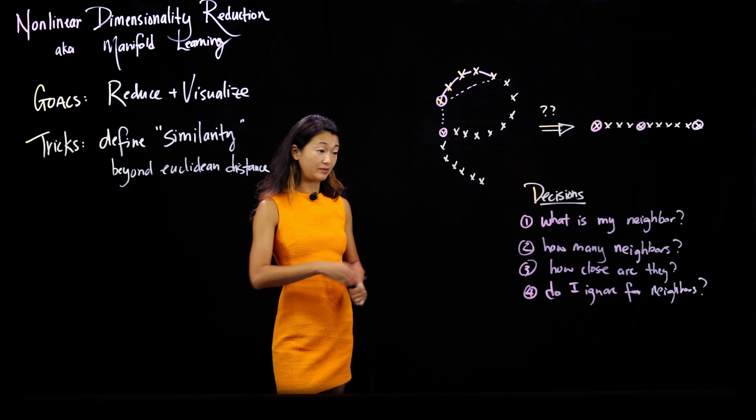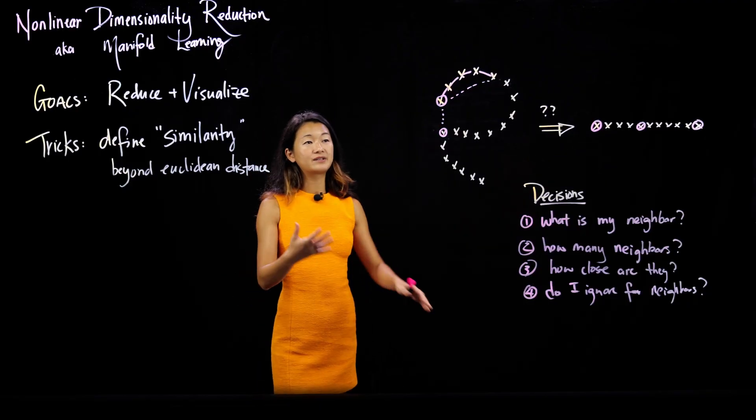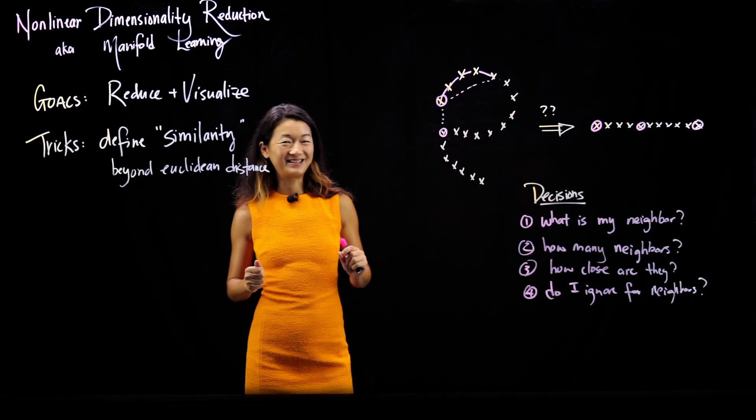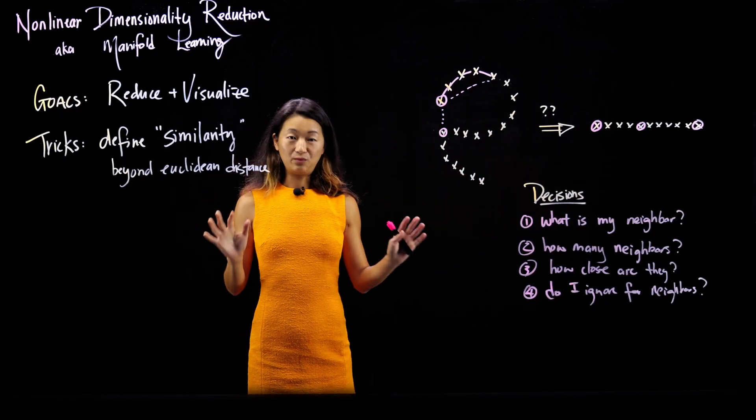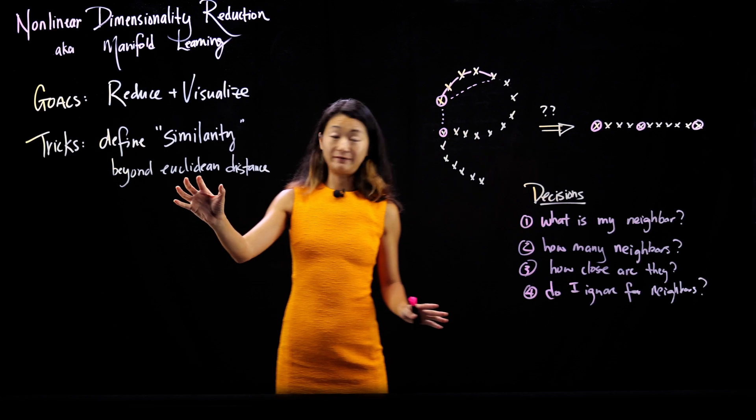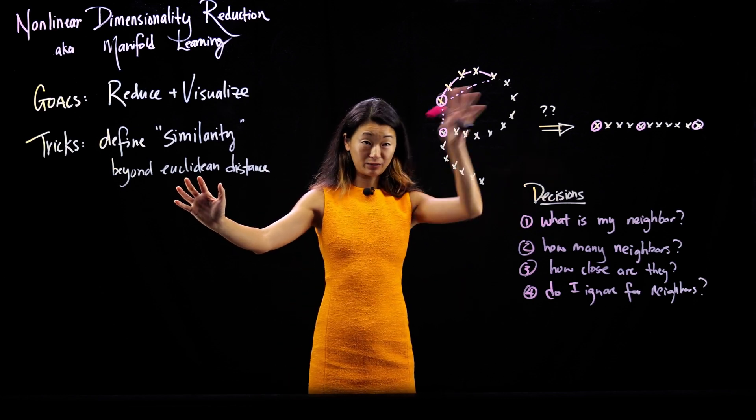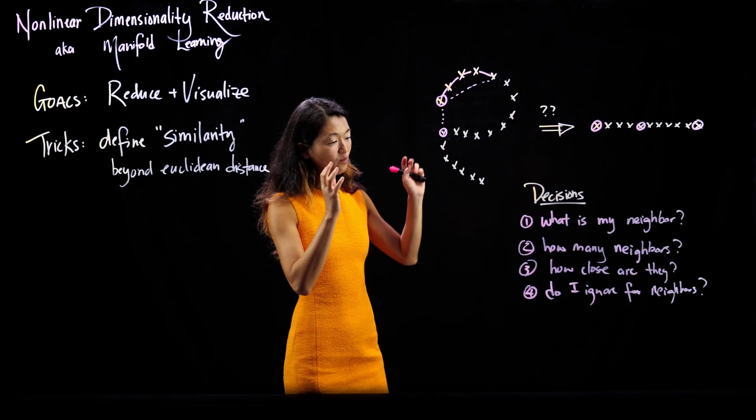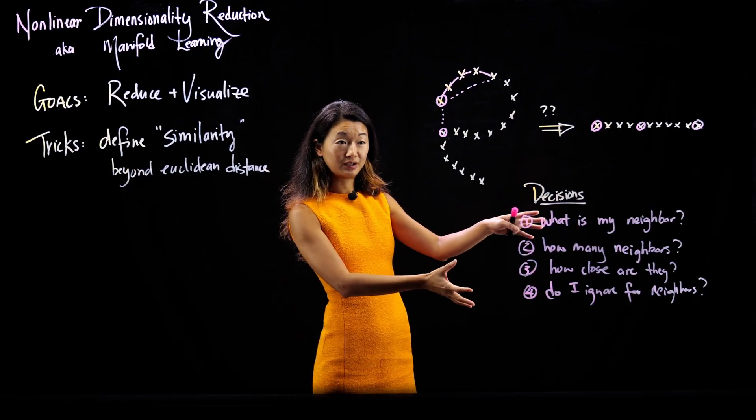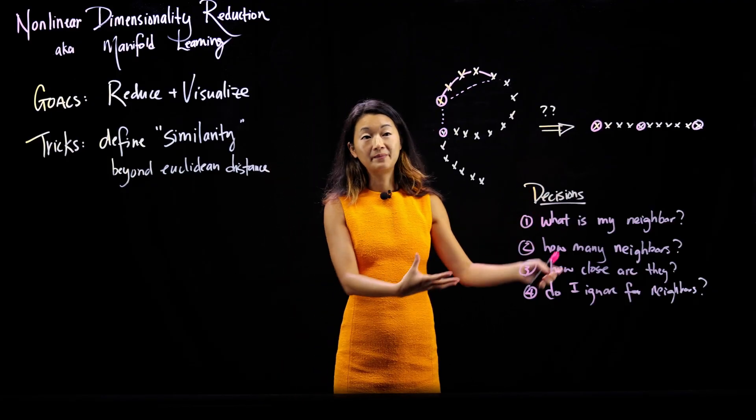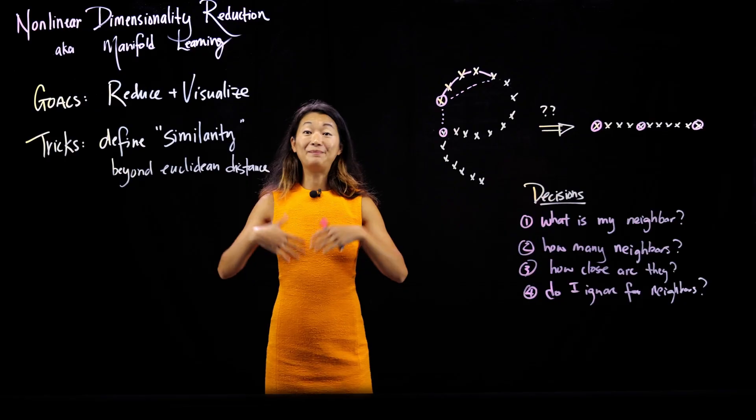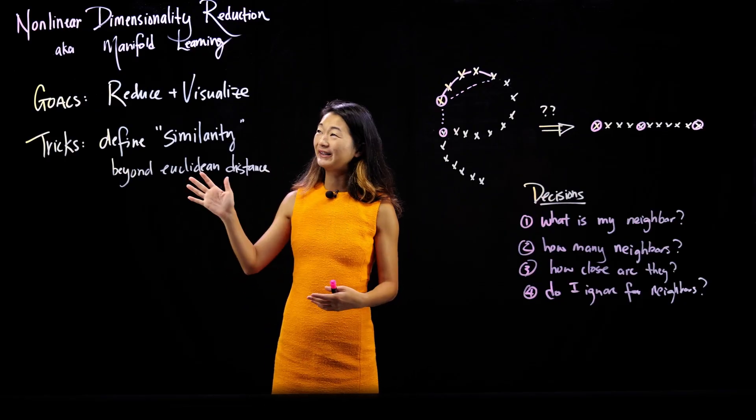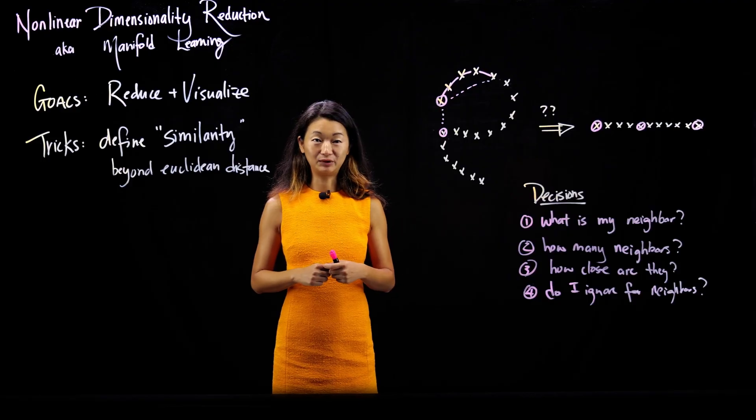So these are the decisions that we need to be able to make. And as you can kind of see by using this kind of graphical analogy here and neighborliness analogies here, there is no one way of doing this. There is one definition of Euclidean distance in XYZ space, XYZ whatever, how hundred-dimensional space, but there is no one right way of making these decisions about who's my neighbor, how many neighbors there are. And that's why there's actually a giant pile of really successful and commonly used algorithms and approaches for doing nonlinear dimensionality reduction and manifold learning.